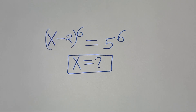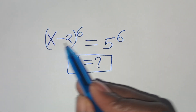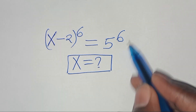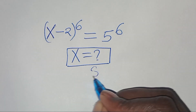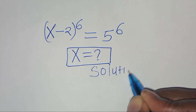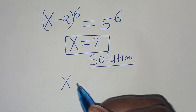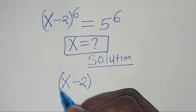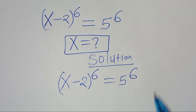Hello everyone, you're welcome to solve this nice algebra problem: (x minus 2) to the power of 6 is equal to 5 to the power of 6. What are the values of x? Let's provide a solution. We have x minus 2 raised to the power of 6, equal to 5 to the power of 6.